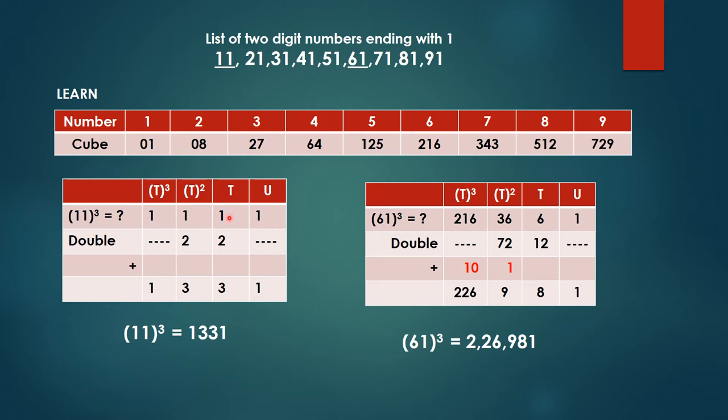For 11, if you observe, in tens place is 1 and in units place is also 1. So we are writing 1 and 1. Now ignore the units place number, consider this tens place. Now 1 squared is 1, 1 cubed is 1. Simple as usual how we did in our previous video. These two middle numbers are to be multiplied by 2. So 1 times 2 is 2, 1 times 2 is 2. Double that number, add them up, you will get 1331. So 11 cubed equals 1331.